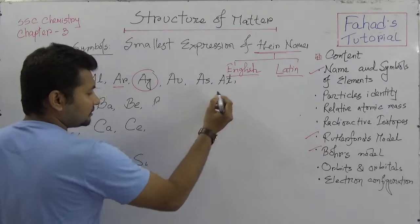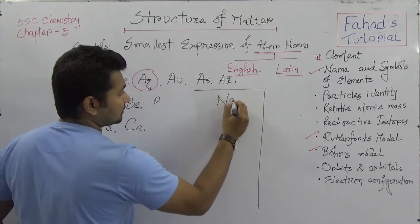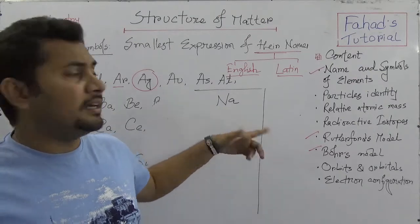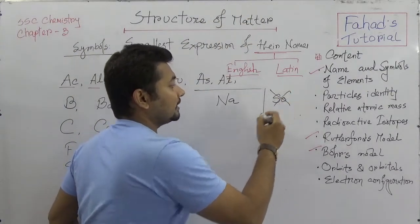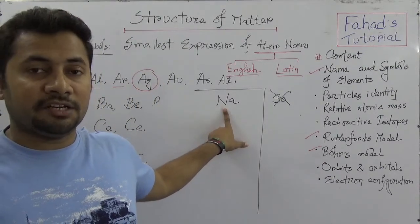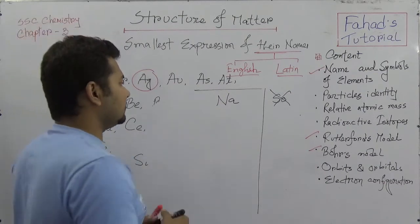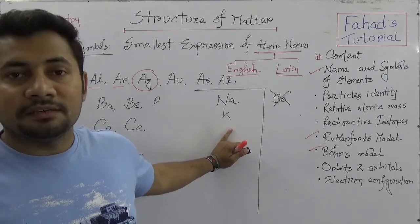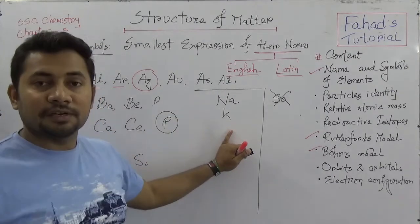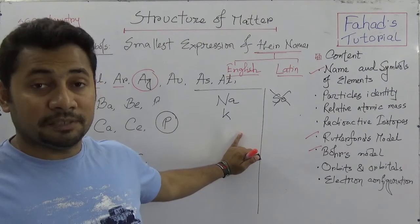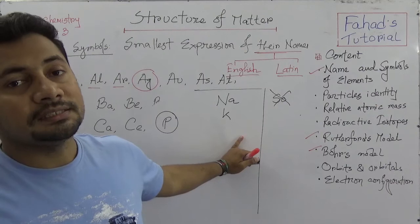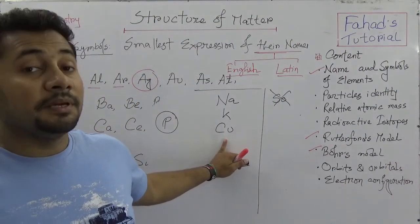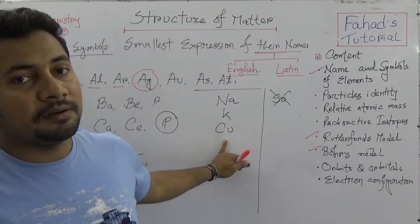For example, 'NA' is sodium — but why NA and not SO? Because NA stands for Natrium, the Latin name. 'K' is potassium — not P, because P is phosphorus. K stands for potassium because the Latin name of potassium is Kalium. And 'CU' stands for copper because the Latin name of copper is Cuprum.